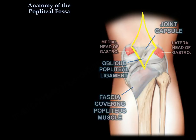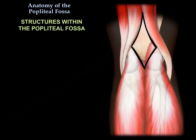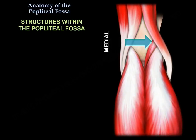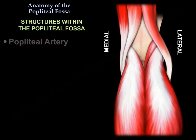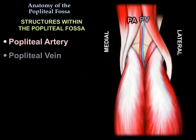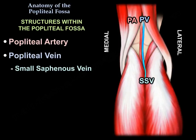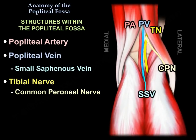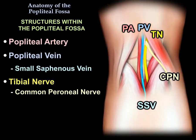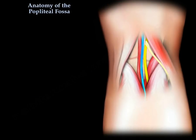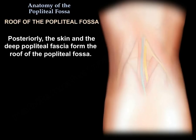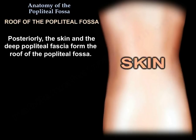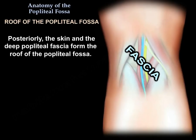The structures within the popliteal fossa, from medial to lateral, include the popliteal artery, the popliteal vein, and the small saphenous vein. The tibial nerve and the common peroneal nerve run across the upper lateral border of the fossa. Posteriorly, the skin and the deep popliteal fascia form the roof of the popliteal fossa.